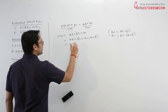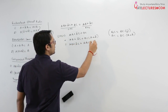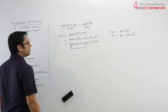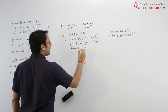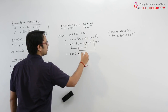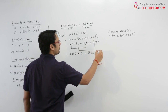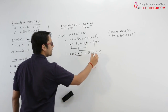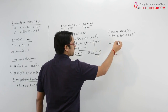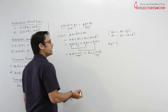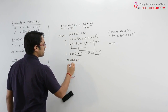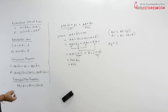Expanding gives AB plus A complement C plus ABC plus A complement BC. Between the first and third terms, take AB as common: AB times 1 plus C. Between the second and fourth terms, take A complement C as common: A complement C times 1 plus B. Since any expression OR 1 equals 1, this simplifies to AB plus A complement C, which equals the right hand side. Hence the consensus theorem is proved.